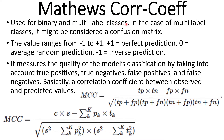Matthew's correlation coefficient (MCC). It is used in both binary and multi-class or multi-label classification problems — in the multi-label case it may be considered as a confusion matrix. The value ranges from negative one to positive one: positive one equals perfect prediction, zero equals average random prediction, and negative one equals inverse prediction. It measures the quality of the model's classification by taking into account true positives, true negatives, false positives, and false negatives — essentially a correlation coefficient between observed and predicted values.